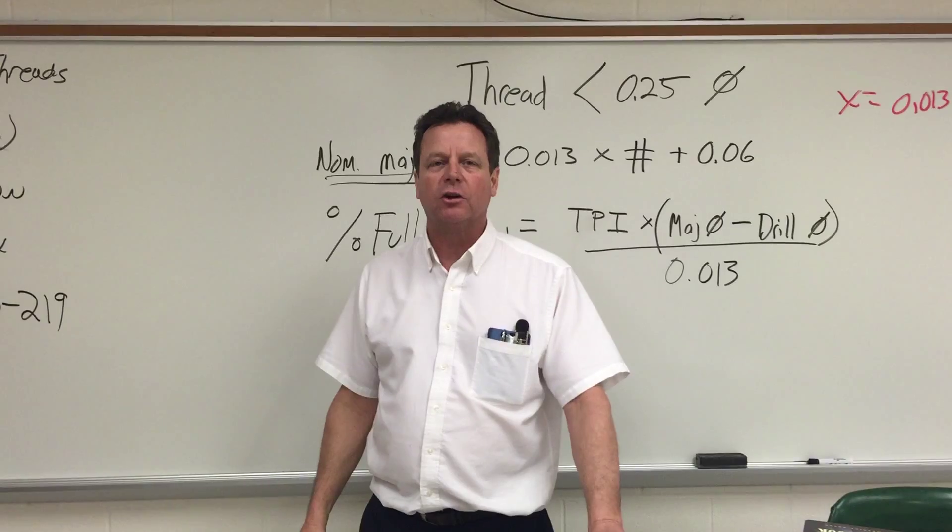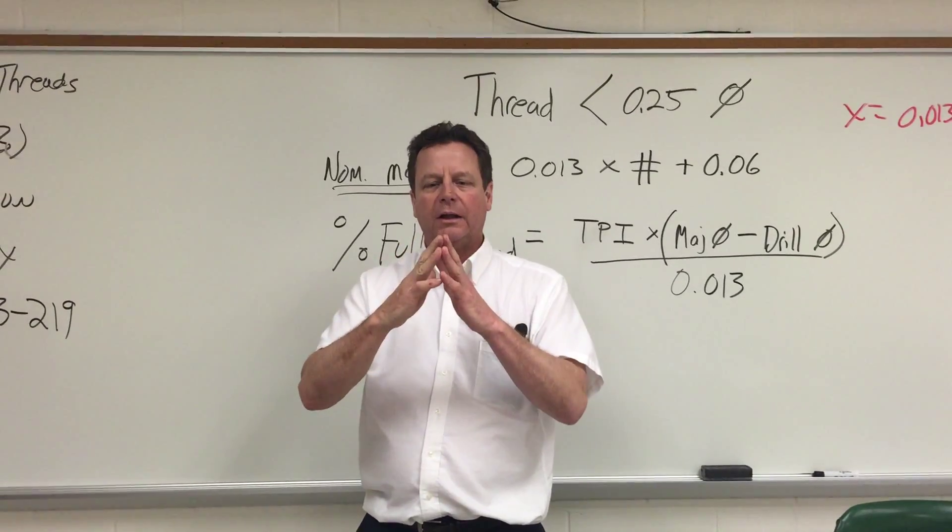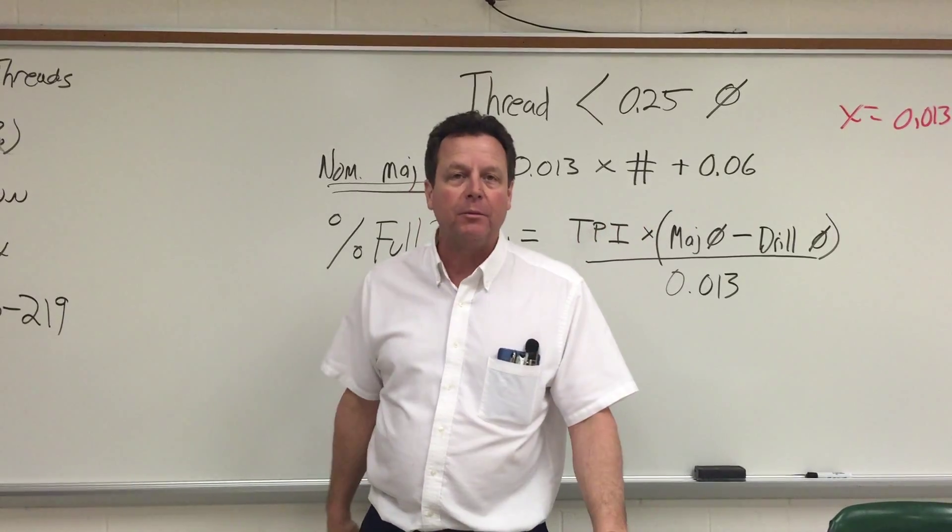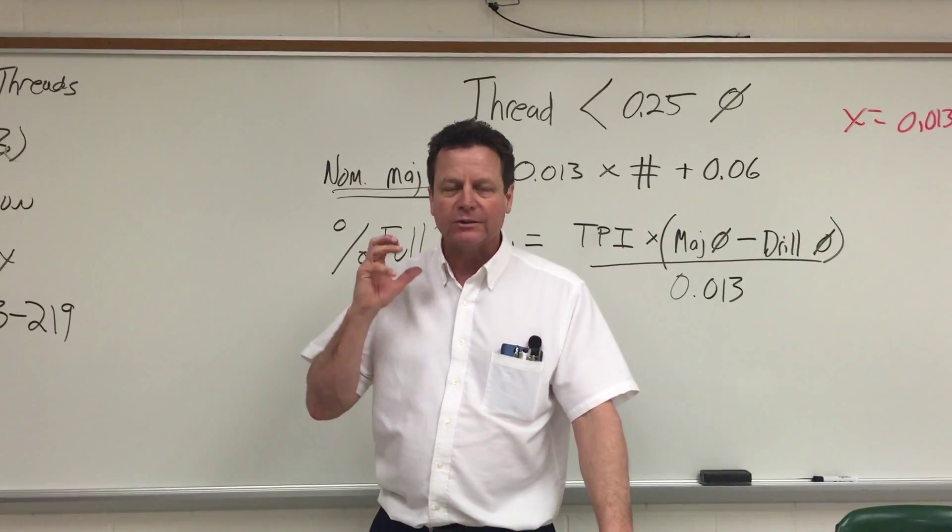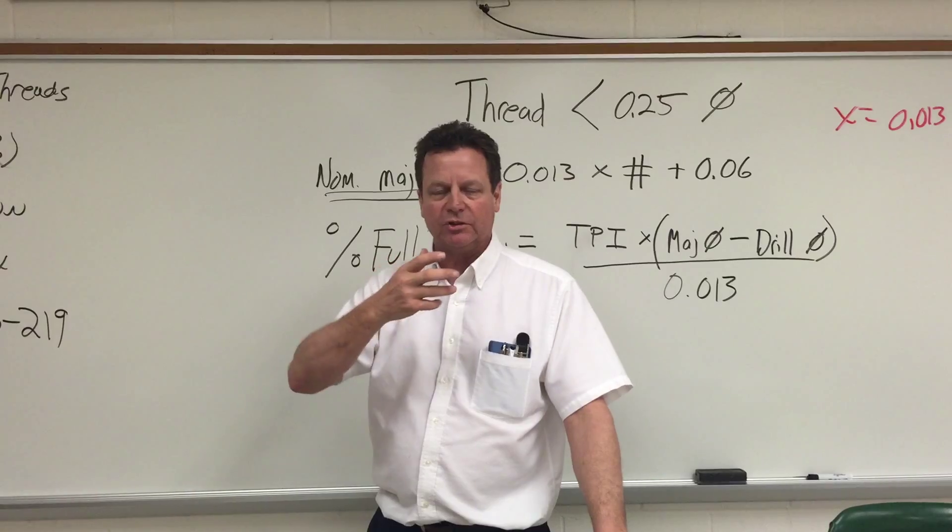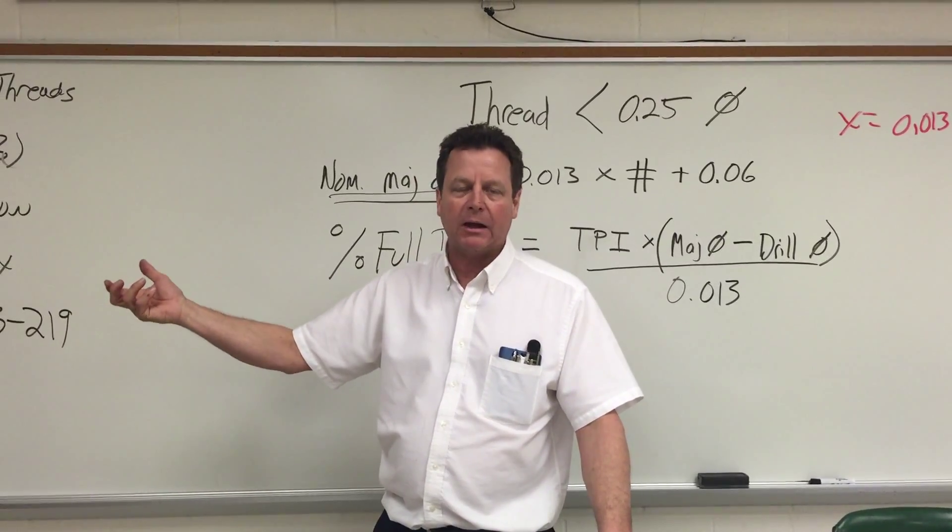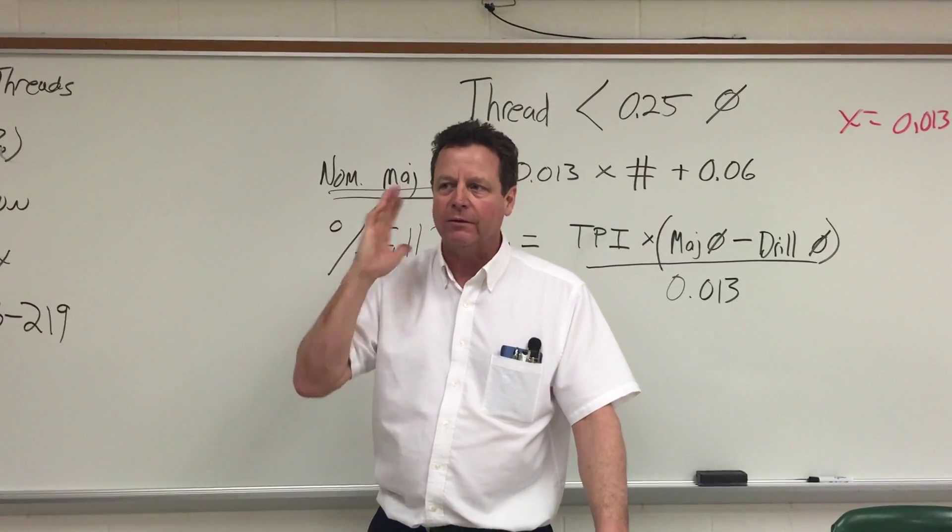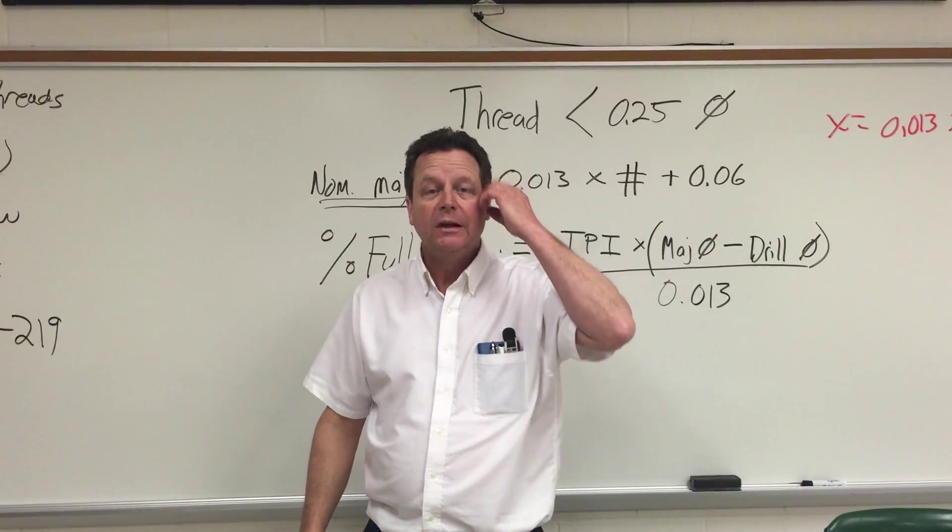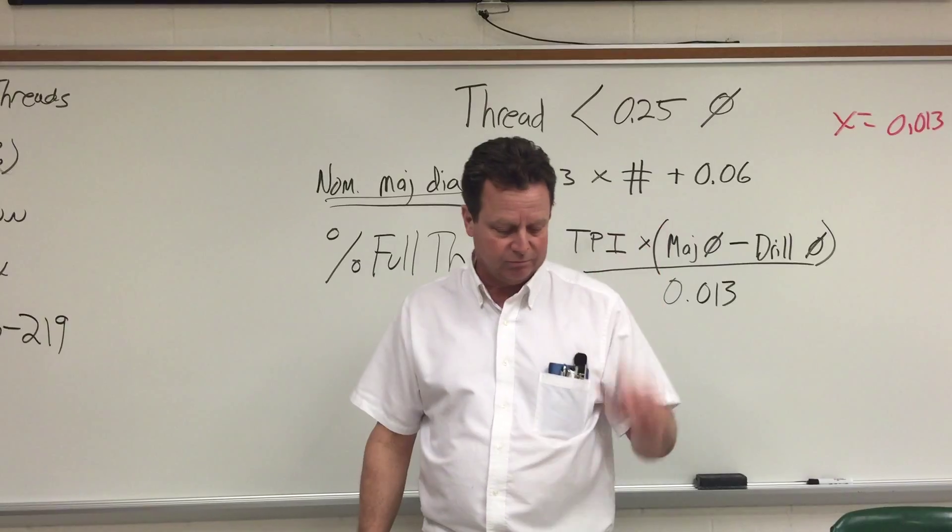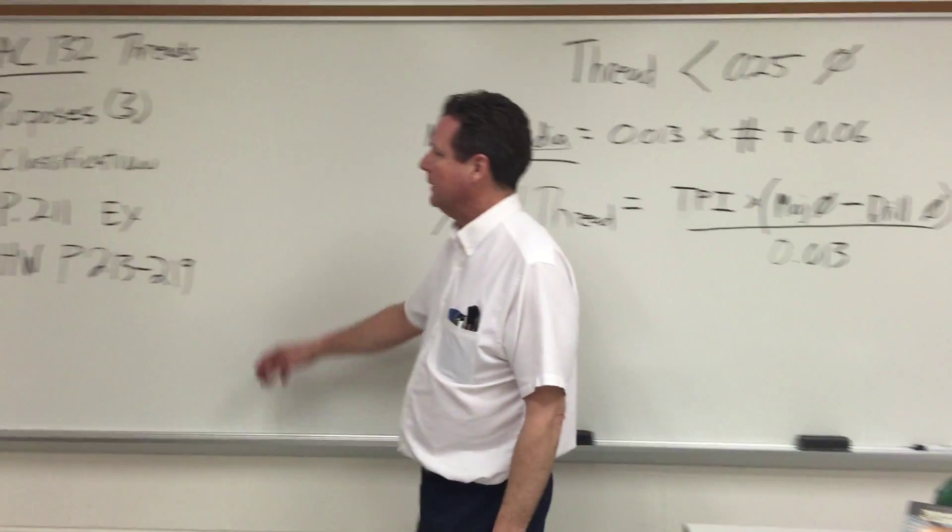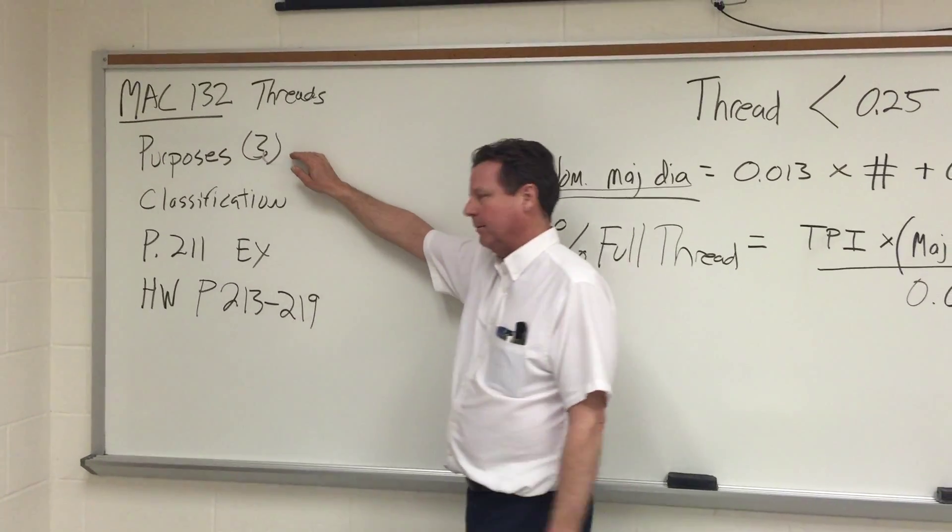The other way threads fail is they can gall, which is when one thread interferes with another. Once a thread galls up, it's pretty much destroyed. You might get your thing back apart again, but if not, all you can do is cut the nut off or saw off the bolt and start over. That's how threads fail, their purpose, and why we make them.